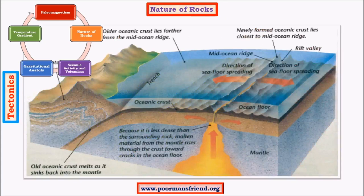Regarding the nature of rocks: oceans have comparatively very young rocks, only a few millions of years old, because of constant outpouring of magma and solidification. Continents, on the other hand, have very old rocks, a few billions of years old. Rocks equidistant from the ridge share the same nature. These are important evidences for plate tectonics.